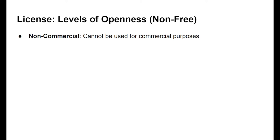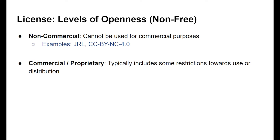There are also licenses considered non-free, which are not suitable for open source usage. One type is the non-commercial license, where the work cannot be used for commercial purposes. These are typically used with papers or datasets in research, but are not considered open source or open science licenses because of their restriction. Examples include the Java Research License (JRL) and CC BY-NC (a non-commercial Creative Commons attribution license). There are also commercial proprietary licenses, which restrict how work is used or distributed — commonly found on games and software that companies produce.